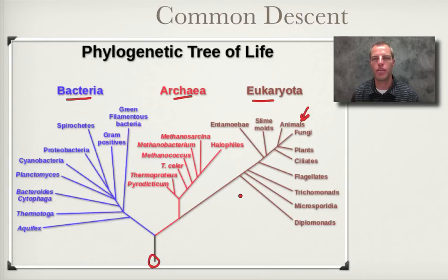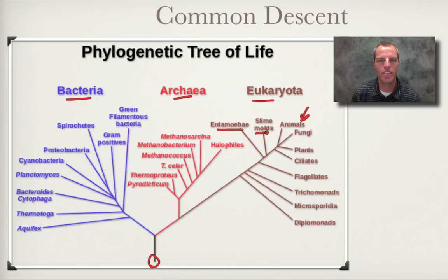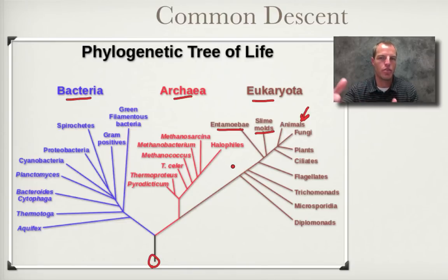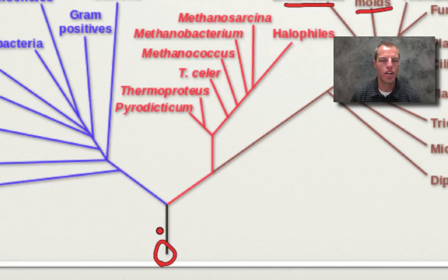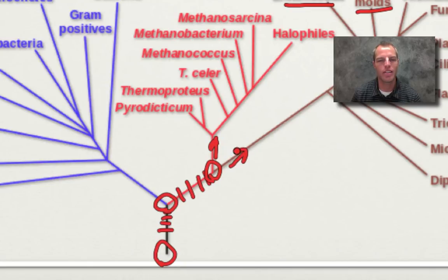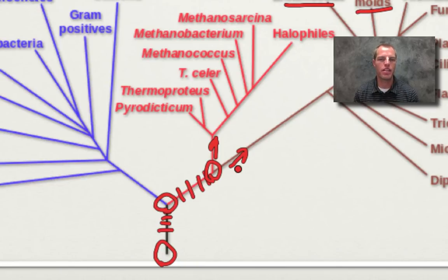The first evidence we're going to look at is the fossil record. The problem with the fossil record is we have evidence of the tips of our tree — for example, slime molds at the tip of this branch — but we don't have the transitional forms. How did it transition from what it used to be into that slime mold, or into an animal? We're missing those transitional forms — evidence for how things changed from one type of animal to another.